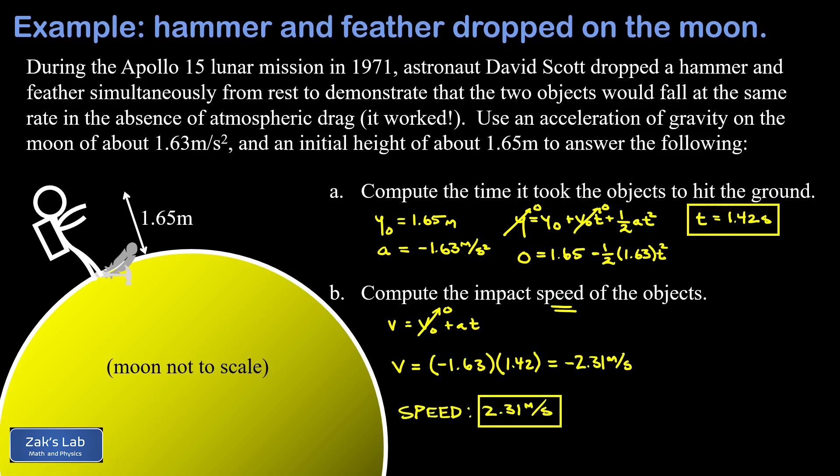In our next physics on the moon problem, we're going to look at a famous moment from the Apollo 14 lunar mission where astronaut Alan Shepard hit two golf balls off the surface of the moon. We're going to do the projectile motion analysis of those golf balls in this one-sixth g environment. I'll post a link to that video at the upper left and I'll see you there.